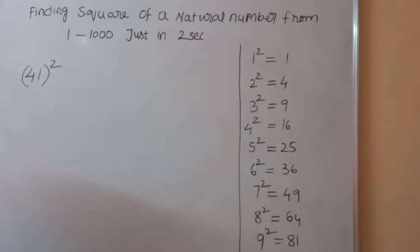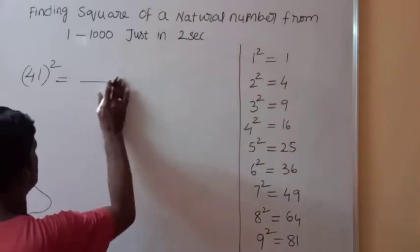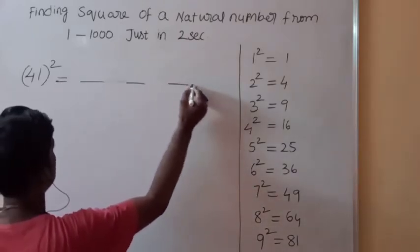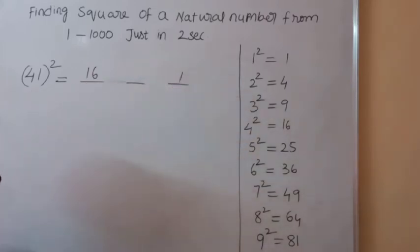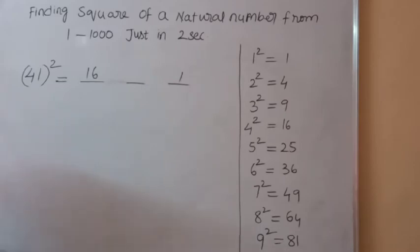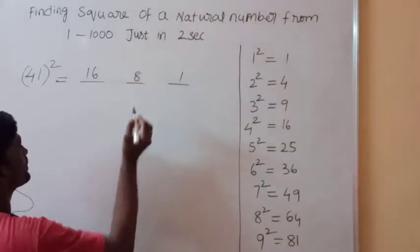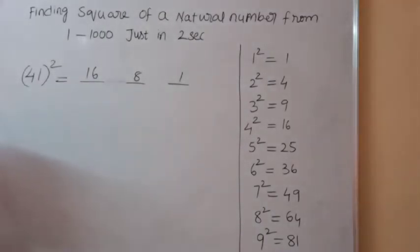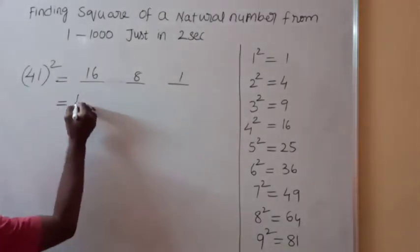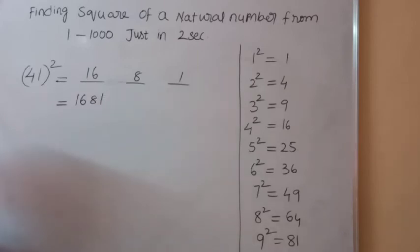What is 41 square? 4 square is 16, 1 square is 1, and 4 into 1 is 4, multiplied by 2 is 8. These two dashes contain only one digit each, so the answer is 1681. 41 square is 1681.